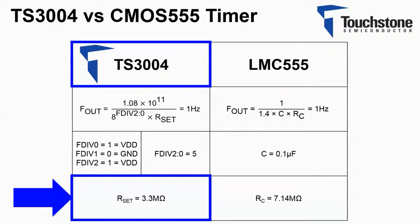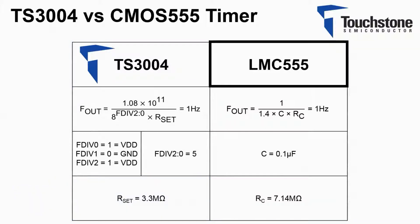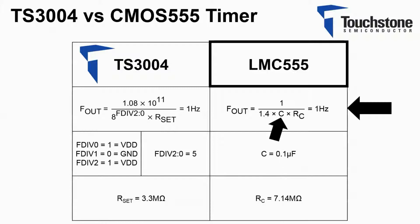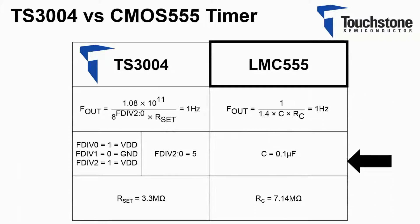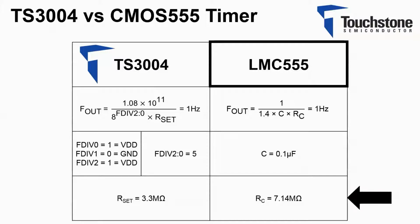Now let's take a look at the CMOS 555. The frequency is defined by two components, the C capacitor and the R sub C resistor. By setting the output frequency to 1 Hz and the C capacitor equal to 0.1 microfarads, the appropriate R sub C resistor value of 7.14 megaohms can be solved for.